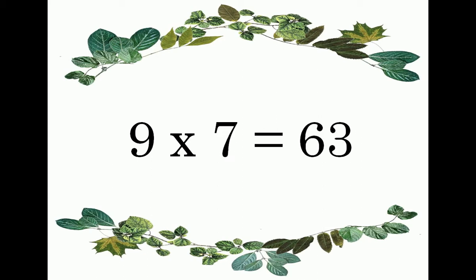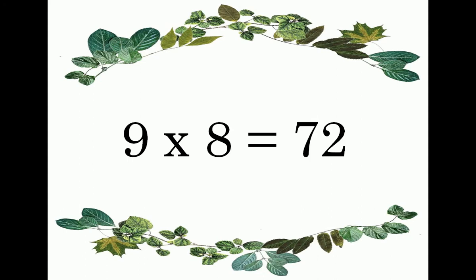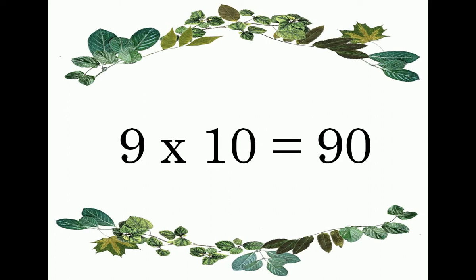Nine sevens are sixty-three. Nine eights are seventy-two. Nine nines are eighty-one. Nine tens are ninety.